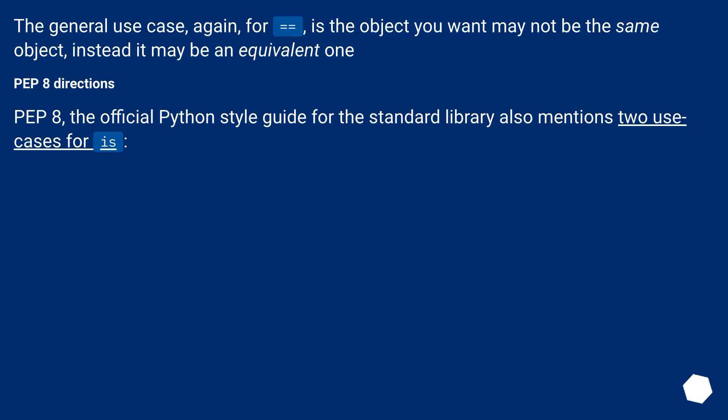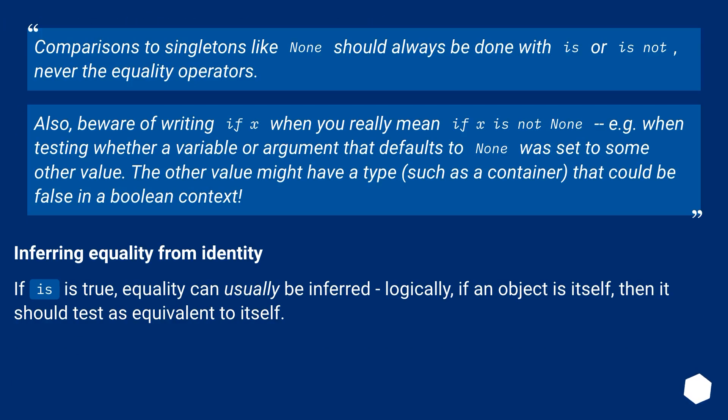PEP8 directions. PEP8, the official Python style guide for the standard library, also mentions two use cases for is. Comparisons to singletons like None should always be done with is or is not, never the equality operators.